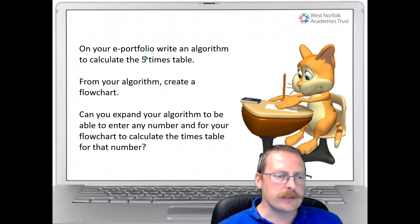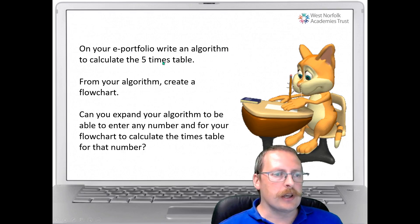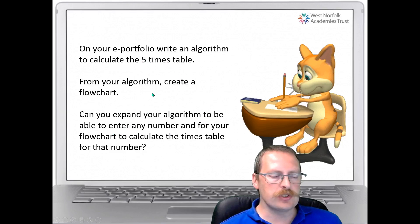And once you've done that as an extension task, you've got this task on here where on your e-portfolio you can write an algorithm to calculate the five times table and create a flowchart to be able to do that. And then if you have done that, you can have an input to work out what times multiplication you wish to work out.